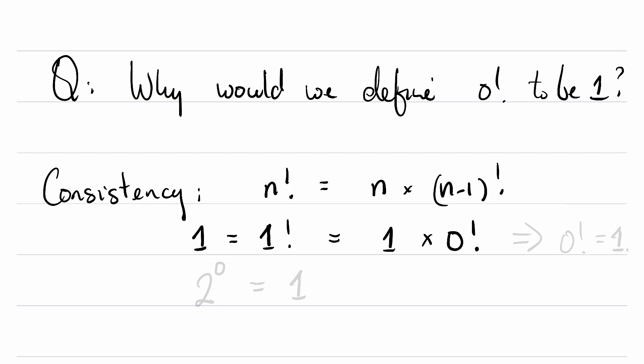But of course, we know that 1 factorial, quite naturally, is 1. And so in order for 1 to be equal to 1 times 0 factorial, 0 factorial would need to be 1.